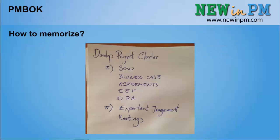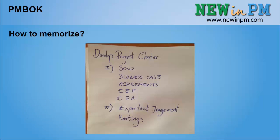Second, grab a piece of paper and a pencil or pen. I was writing down all the ITTOs from the beginning. I started by developing a project charter, beginning with the inputs — I wrote down all the inputs: Statement of Work, Business Case, and others. Then I went to tools and techniques and started with expert judgment, then wrote meetings. If you've already revised this topic, meetings is not the correct answer. So every time I got a wrong answer while writing, I started from the beginning.